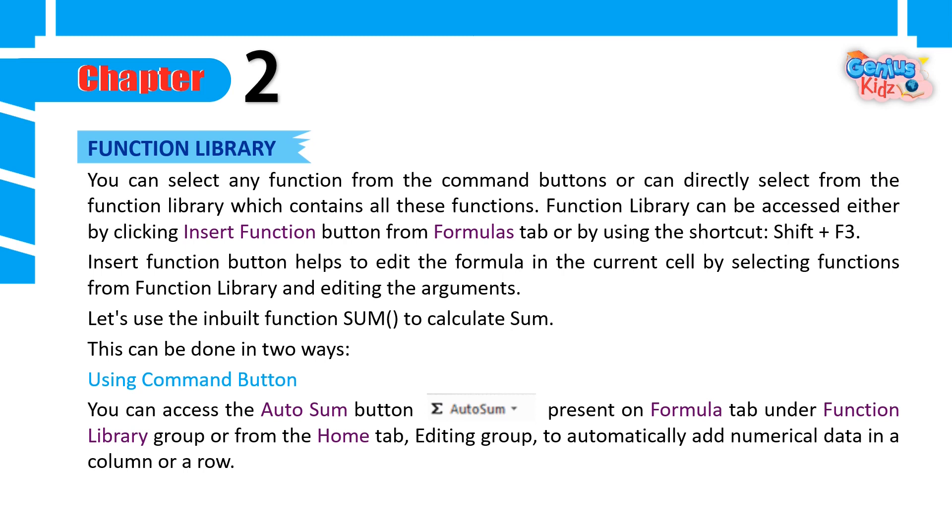Function Library: You can select any function from the command buttons, or can directly select from the function library which contains all these functions. Function Library can be accessed either by clicking Insert Function Button from Formulas tab or by using the shortcut Shift plus F3. Insert Function Button helps to edit the formula in the current cell by selecting functions from function library and editing the arguments. Let's use the inbuilt function sum to calculate sum. This can be done in two ways.